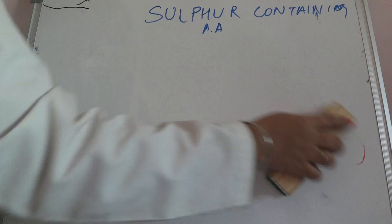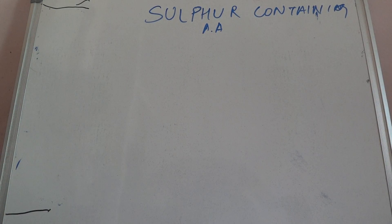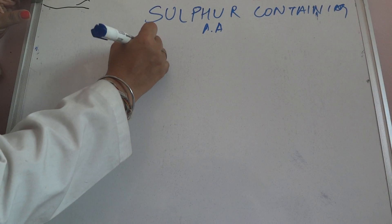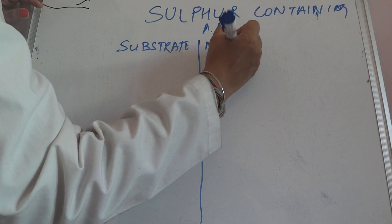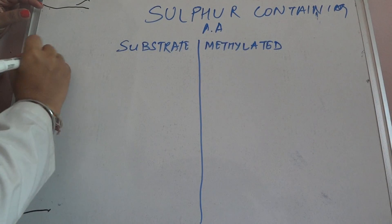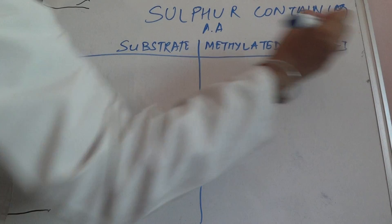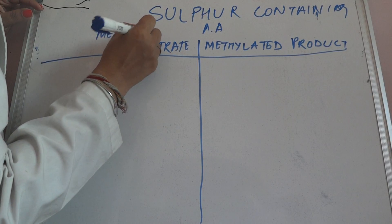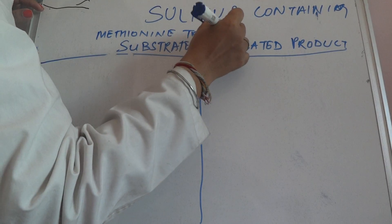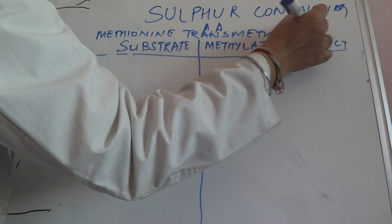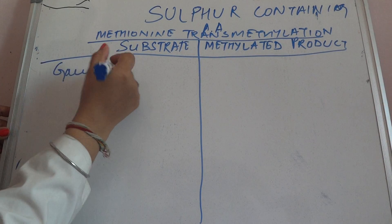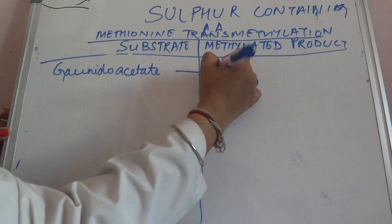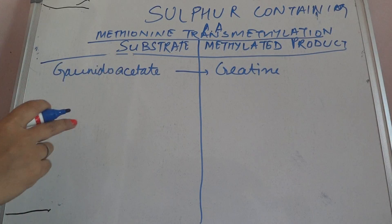Now, as we have first told about the transmethylation reactions where methionine will take part, we will see the substrates where it is important. It is better to learn this because it can be asked as an MCQ or useful in writing metabolic pathways. First substrate: guanidoacetate. This is in the formation of creatine. Guanidoacetate forms creatine by taking the methyl group.